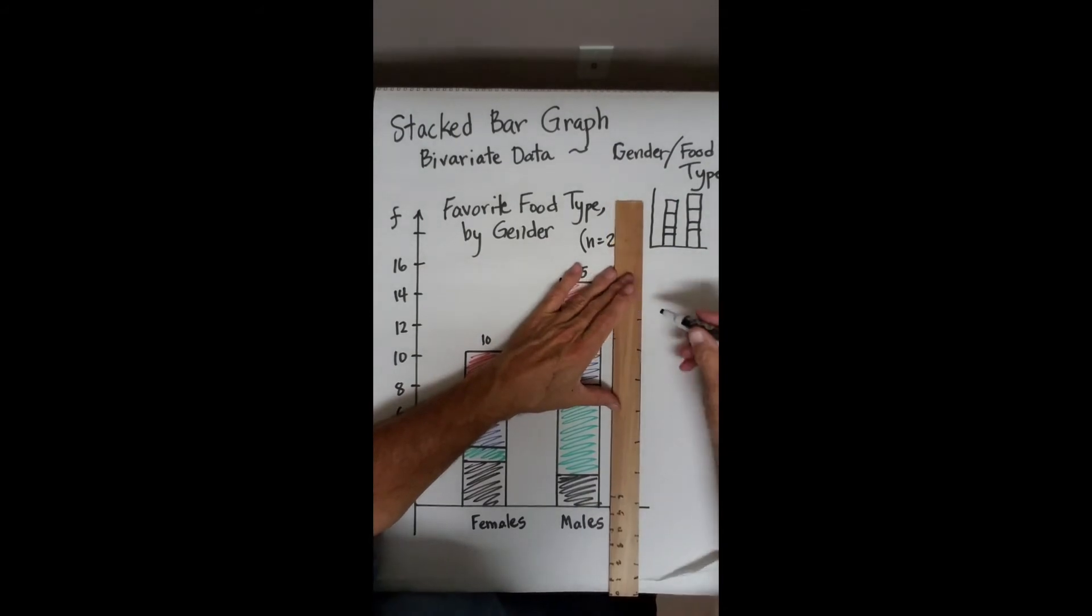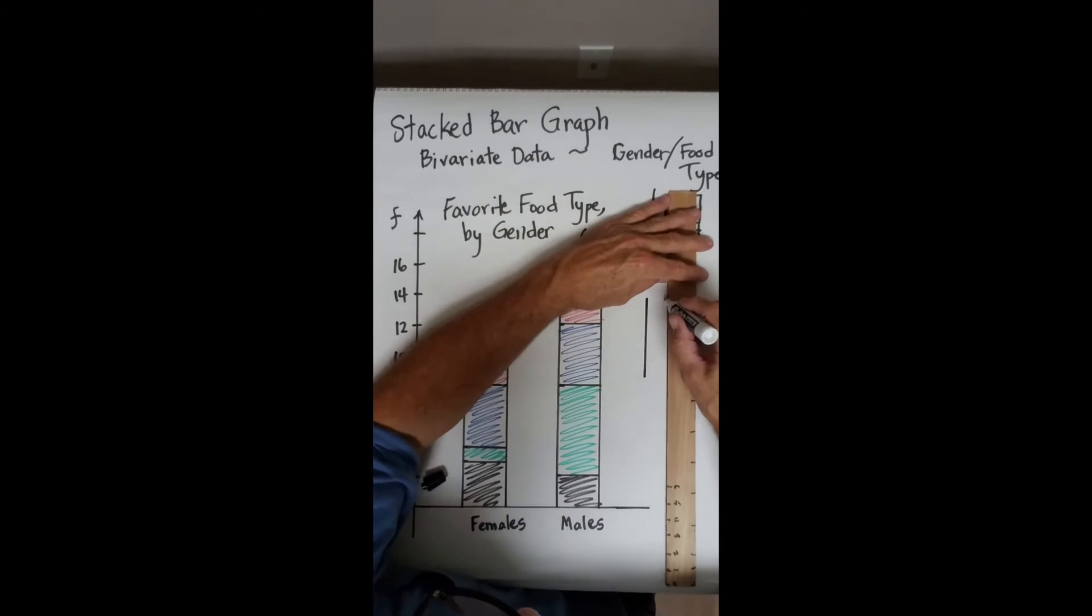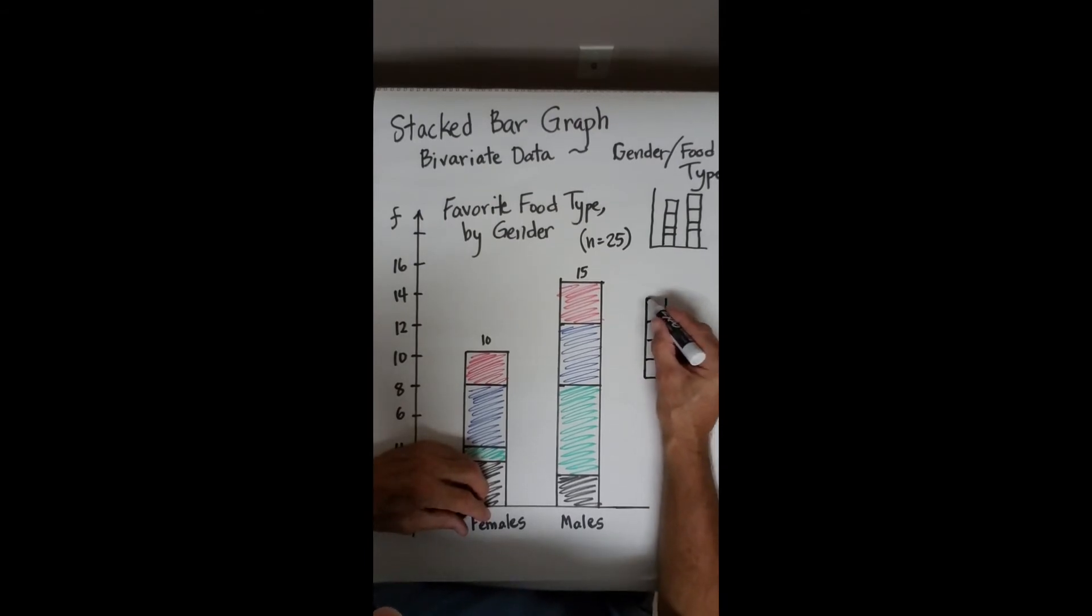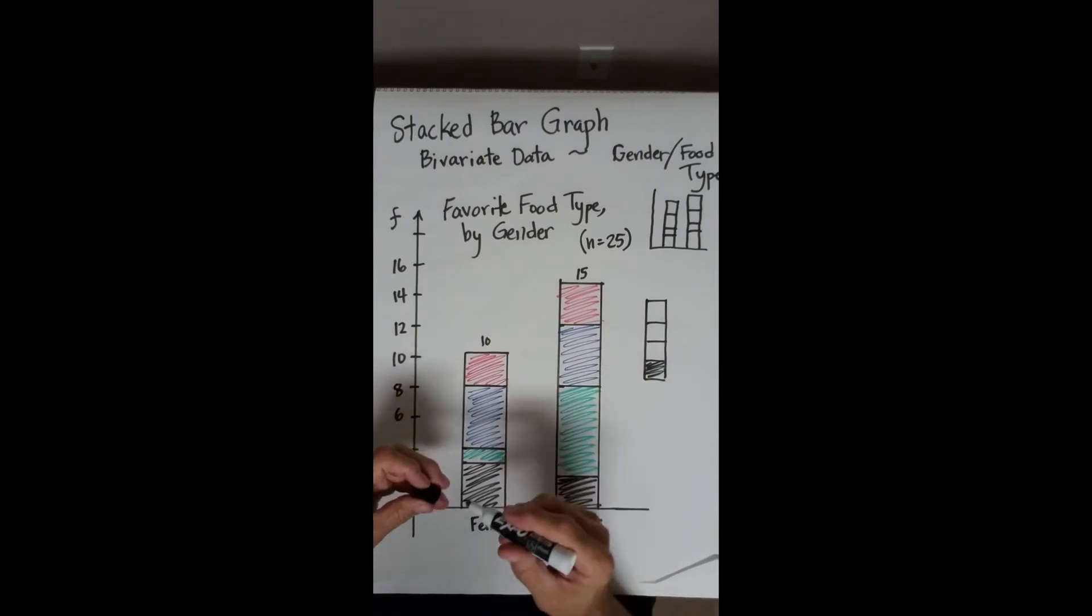I need a legend. So over here, on the right side of my graph, I can put a characteristic key. And in your key, put the color order in your key the same as the color order in your graph.